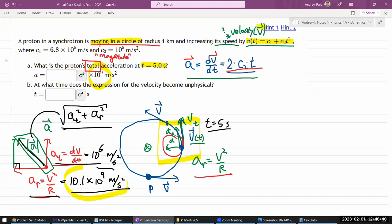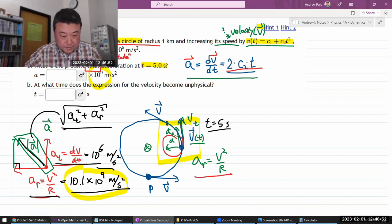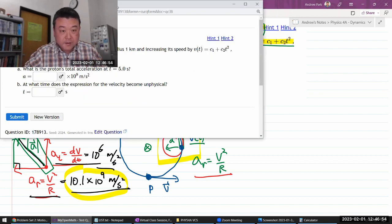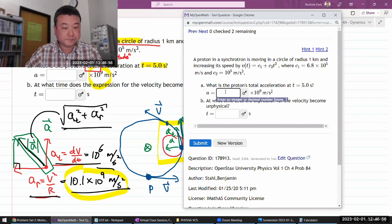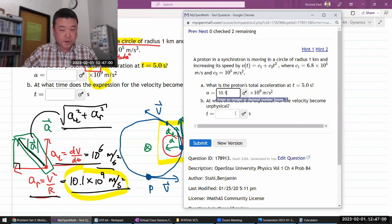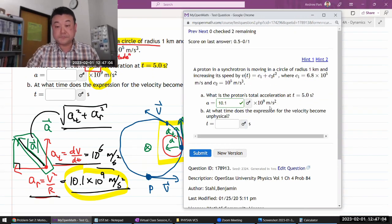You could almost ignore the tangential acceleration because it's so small compared to the radial acceleration. So I'm just going to use this because I know that will get accepted as a correct answer. So let me just get to that and enter 10.1. Then times 10 to the power of 9, that's already taken care of there.